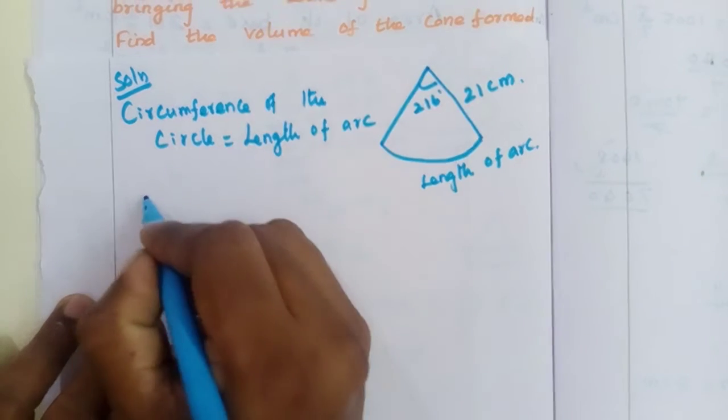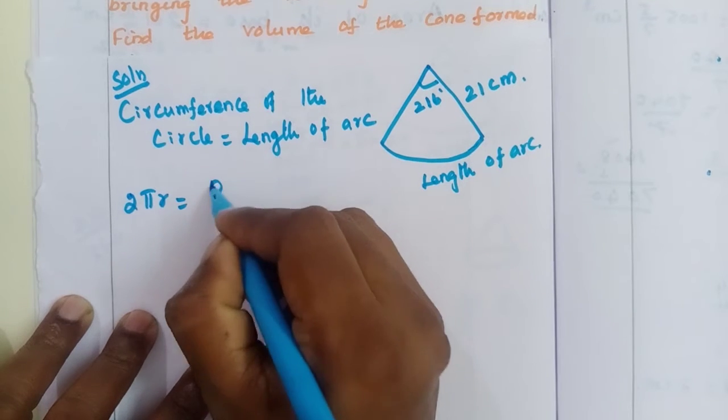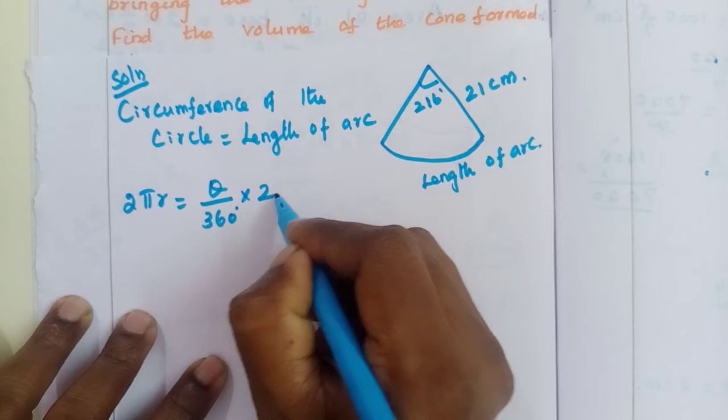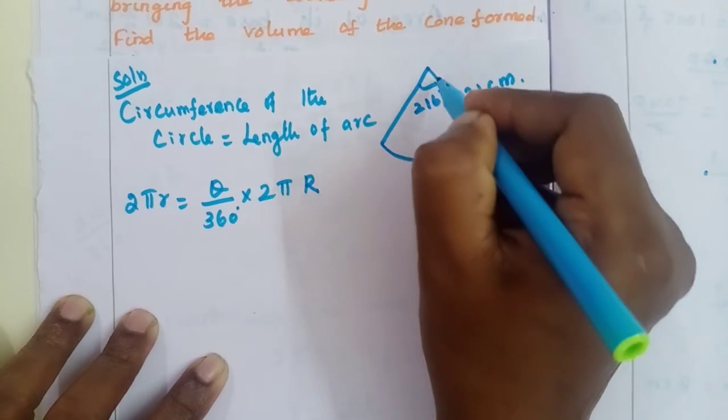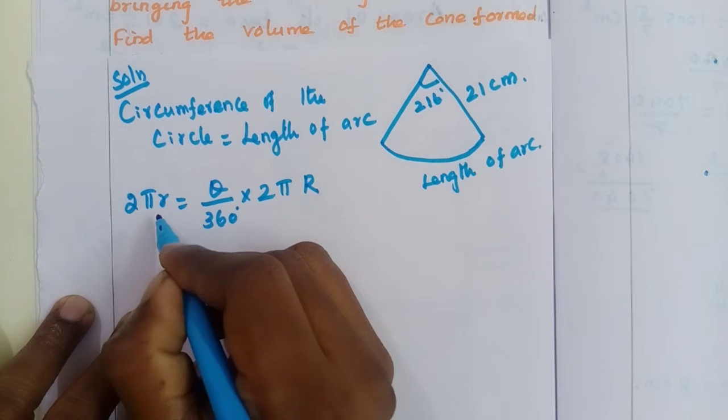The length of arc formula is theta by 360 into 2 pi capital R, where R is the radius of the base of the cone.